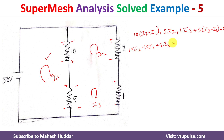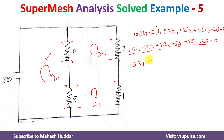Simplifying: the I1 terms give minus 10 minus 5, so minus 15·I1. The I2 terms give 10 plus 2, so plus 12·I2. The I3 terms give 1 plus 5, so plus 6·I3, equals zero. Make this equation number two.